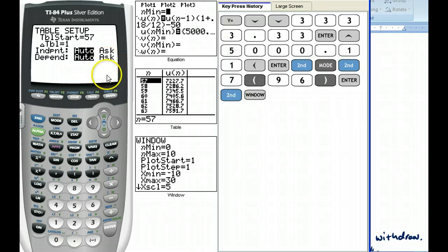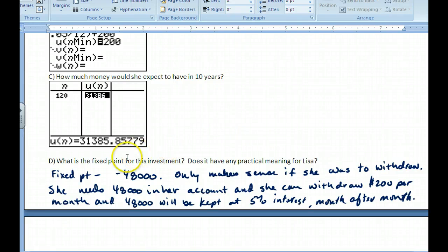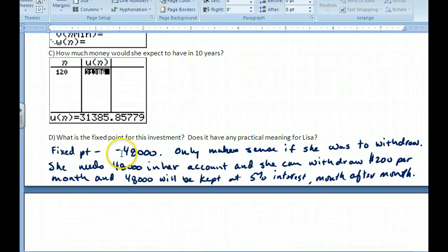Then the fixed point of this one: if you set up X = X × (1 + 0.05/12) + 200 and find the fixed point, you're going to end up with negative $48,000. For the annuity, it really doesn't make any sense. All you can do is turn it around and use it as a credit card example.